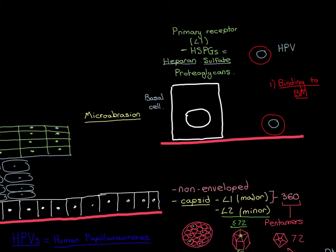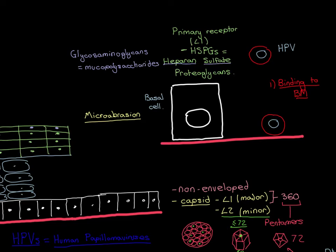Heparan sulfate is an example of a polysaccharide — a carbohydrate molecule — that comes under the category of glycosaminoglycans, also called mucopolysaccharides. Glycosaminoglycans, abbreviated to GAGs, are a class of carbohydrate molecules, and many important structural carbohydrates in biology are glycosaminoglycans.